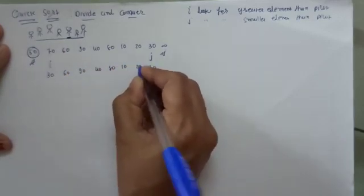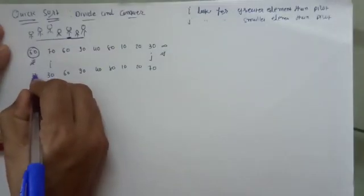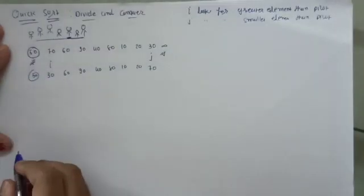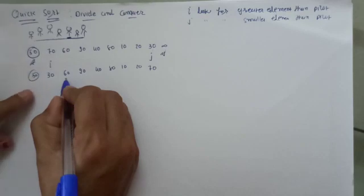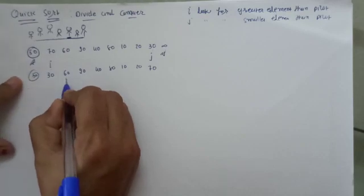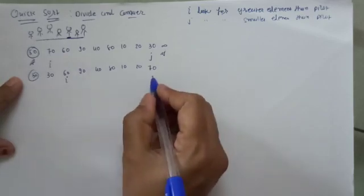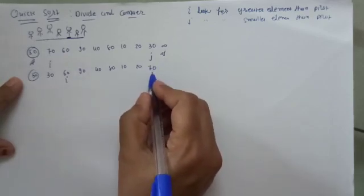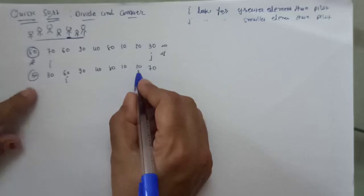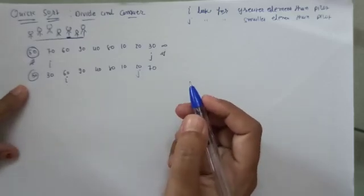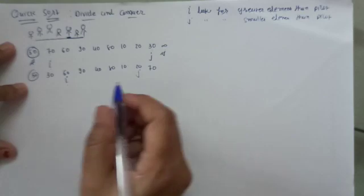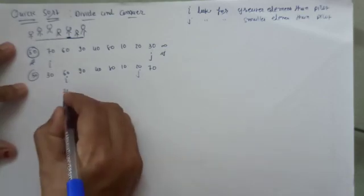Next, i advances and looks for a greater element. 60 is greater than 50, so i stops here. j was at its previous position — 20 is smaller than 50, so j stops here. Now we exchange 20 and 60.